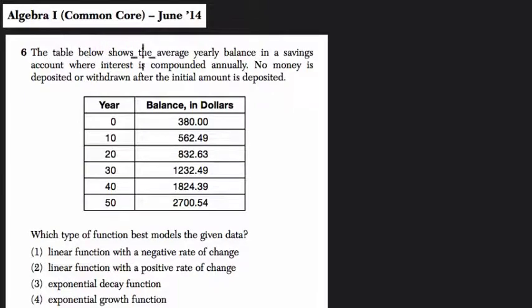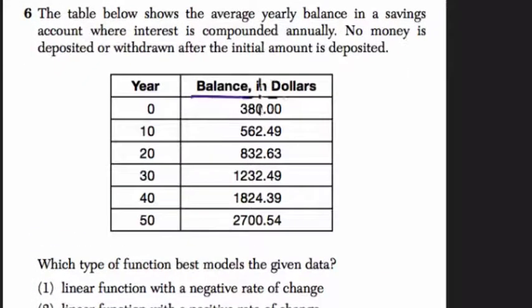Here they tell us that the table below shows an average yearly balance, so this is our balance in dollars, in a savings account, where interest is compounded annually. So interest is the amount by which your money grows each year in an account, and compounded annually means that the interest keeps applying every year. So every year, your money is growing by some percentage, by some interest.